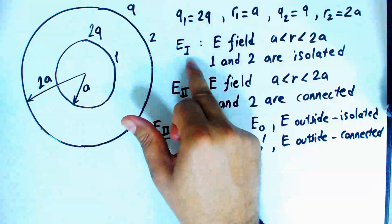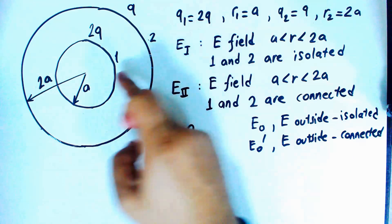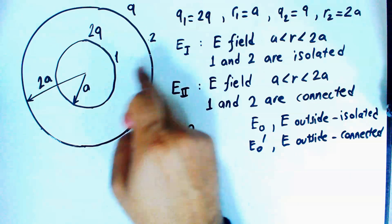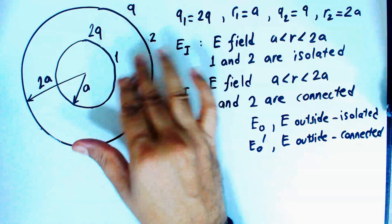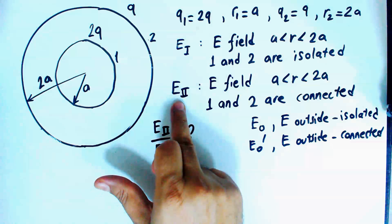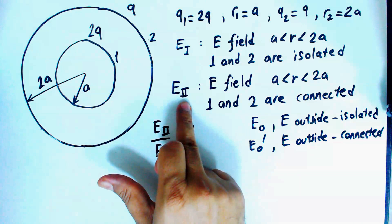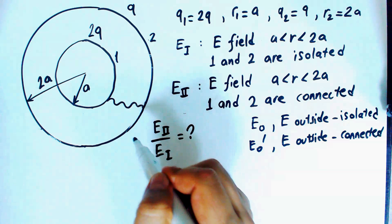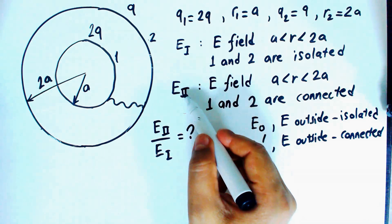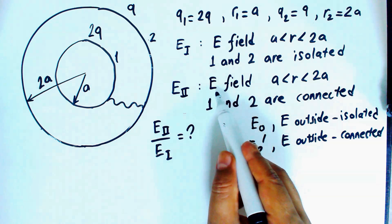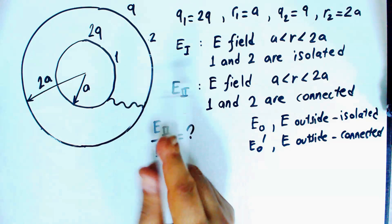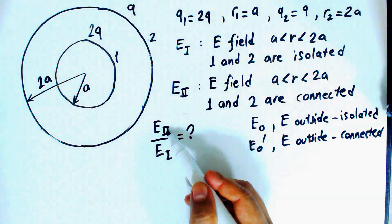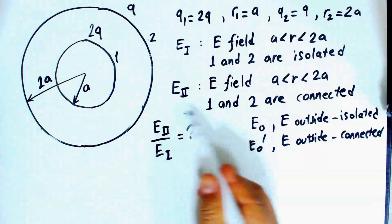I define the electric field E1 between the shells, in the region where r is larger than a and less than 2a, when these two shells are isolated — not connected to anything. And I define the electric field E2 in the second case, when we connect these two shells by a conducting wire. We have to calculate the ratio E2 divided by E1.